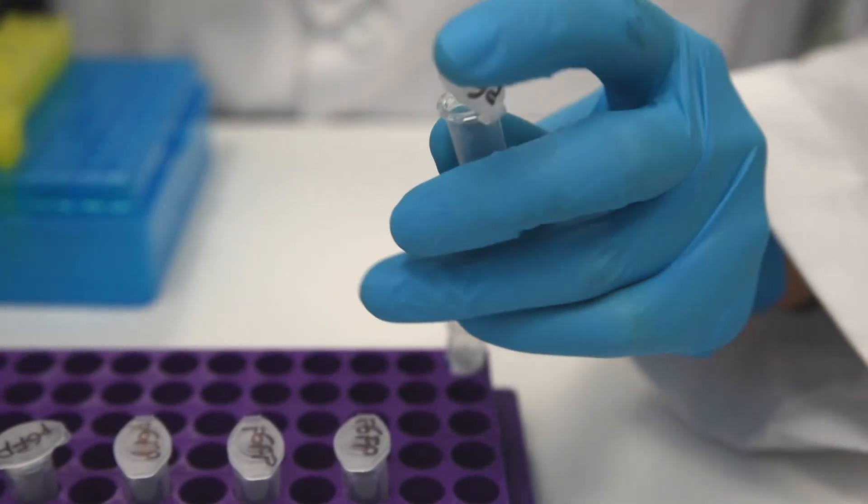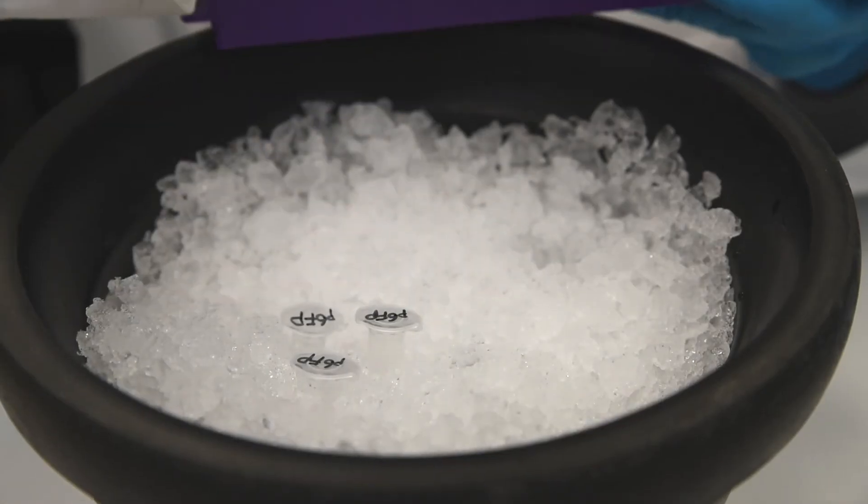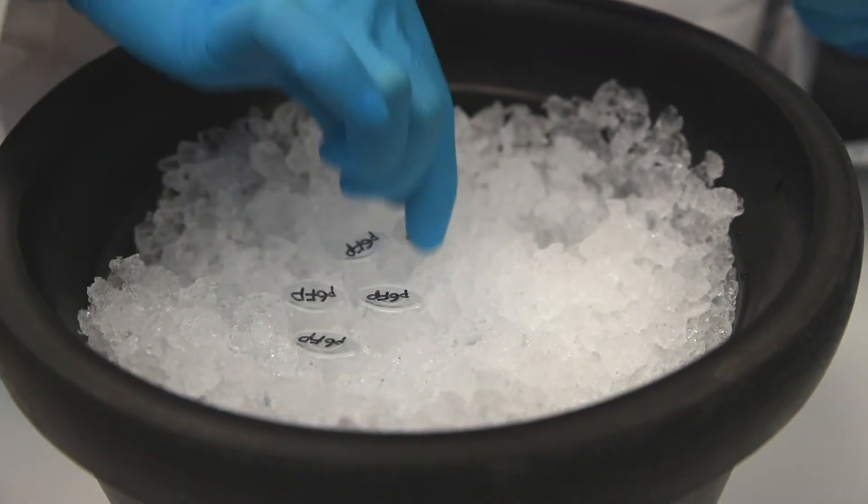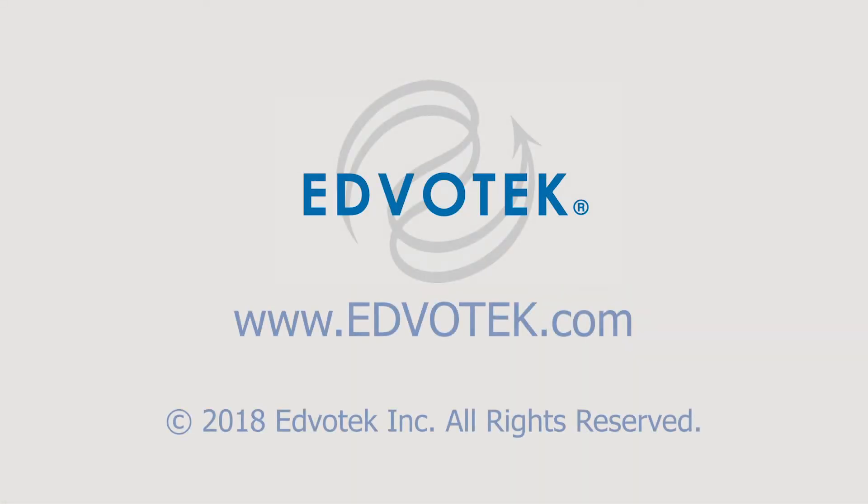Step 8: Using an adjustable volume micropipette, dispense 12 microliters of the plasmid DNA to each of the microcentrifuge tubes labeled pGFP. Cap the tubes and place them on ice. You are now ready for students to perform Module 1: Transformation of E. coli with GFP.